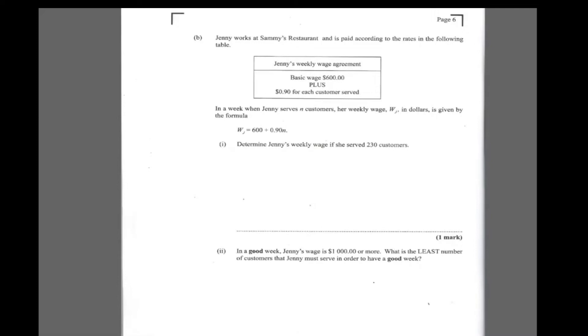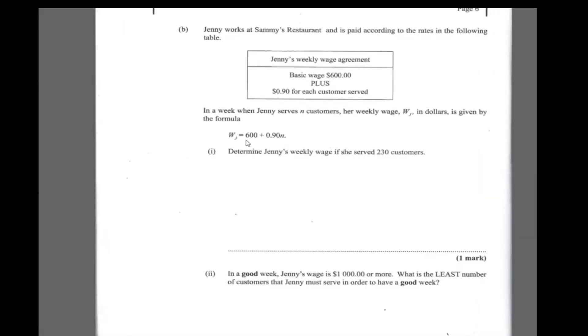Now let's look at part B. Jenny works at Sammy's restaurant and is paid according to the rates in the following. Jenny's weekly wage agreement is her basic wage is $600 plus 0.9 for each customer served. So think of that as like a little bonus thing. So in a week when Jenny serves N customers, her wage in dollars is given by the formula $600 plus 0.9N. So you're telling me if Jenny don't serve nobody at all but just turn up to work, which is never possible, if she just goes to work and let's say she don't serve nobody, which means N is zero, she'll still make $600, which is impossible once you're a server, you have to serve. But just looking at it, if she don't serve nobody, she'll still get $600. So that's a good basic wage to be getting $600.